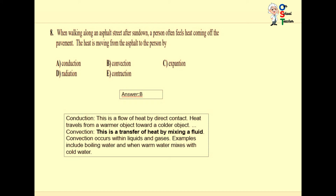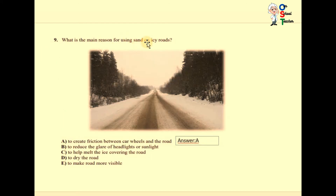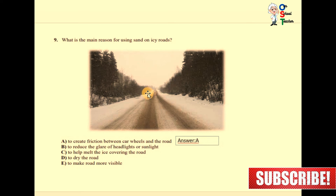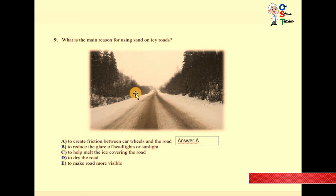Question number nine: what is the main reason for using sand on icy roads? The options include creating friction, reducing glare, melting ice, drying the road, or making the road more visible. Ice is very slippery and therefore dangerous. We use sand on icy roads to create friction between car wheels and the road. Answer A is correct.